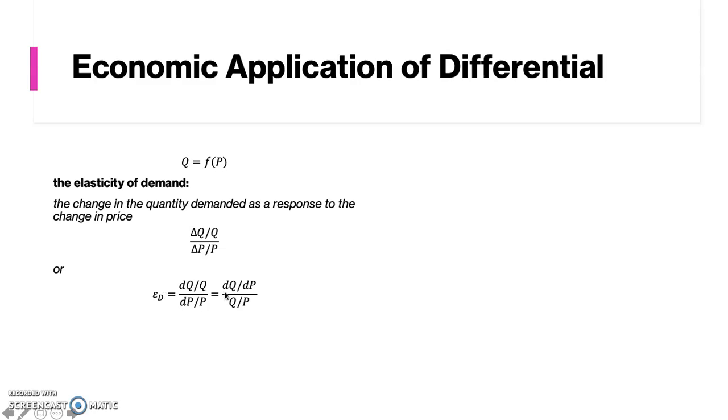Observe that the ratio dq per dp can be interpreted as the derivative or the marginal function of the demand function. We can interpret similarly the ratio of q over p in the denominator as the average function of the demand function.